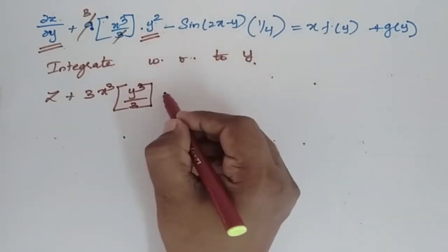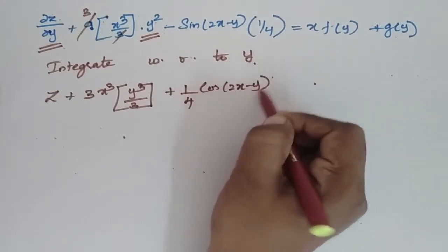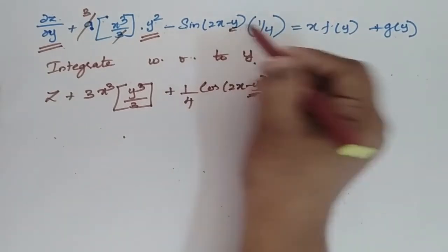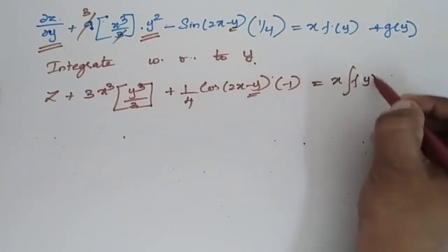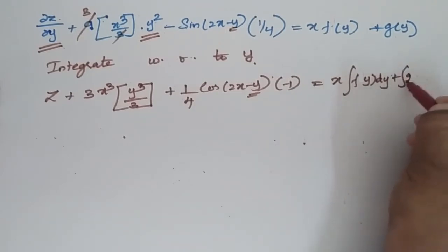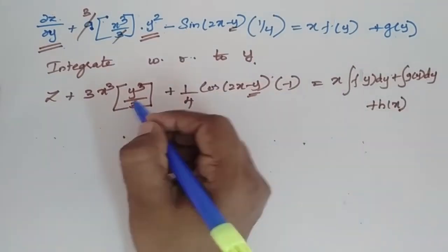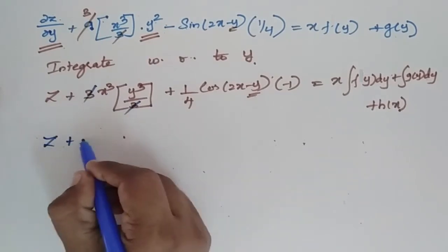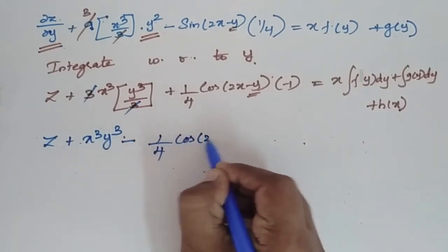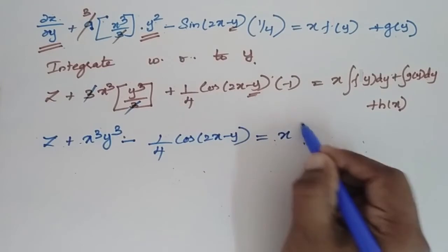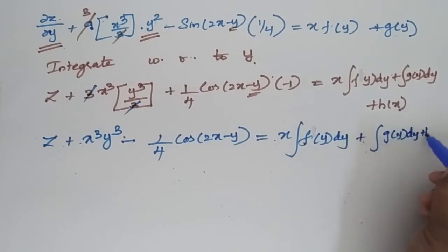The integration of sin x is minus cos x, so minus times minus gives plus. I can bring the 1/4 factor: cos(2x - y), where the derivative of (2x - y) with respect to y is minus 1. This equals x · ∫f(y)dy + ∫g(y)dy + h(x). Simplifying: z + x³y³ - (1/4)cos(2x - y) = x · ∫f(y)dy + ∫g(y)dy + h(x).